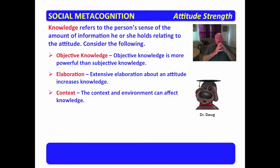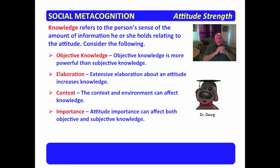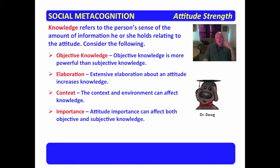The context and environment can affect knowledge. There's an old saying: it's hard to soar with eagles when you work with turkeys. If you're in a context or environment where knowledge about that attitude is important, that will cause you to want to learn more about it — and when you learn more, your attitude strength increases. Attitude importance can affect both objective and subjective knowledge; if we deem it important, that will cause us to increase our knowledge about the attitude, which in turn strengthens attitude strength.